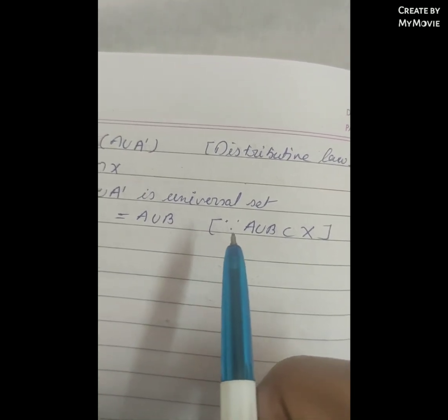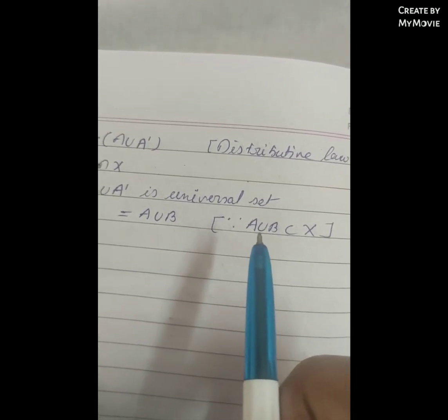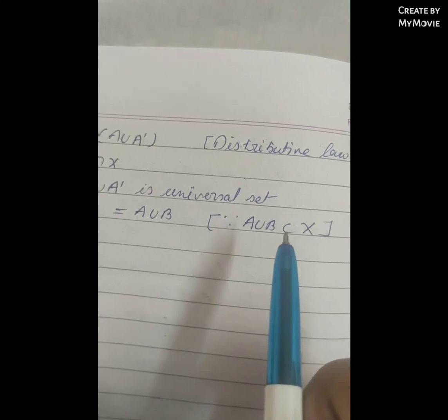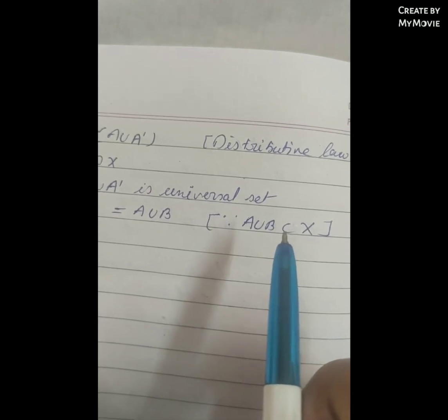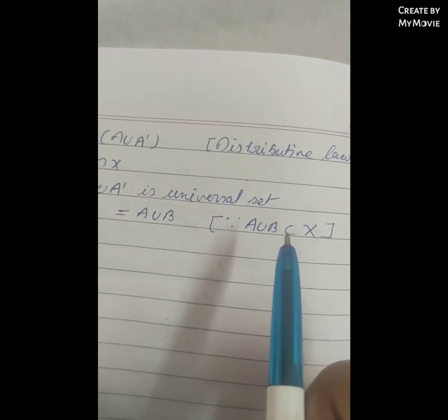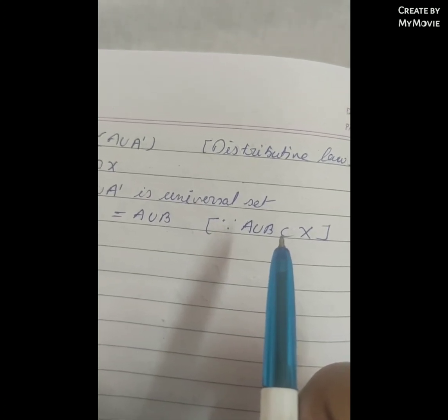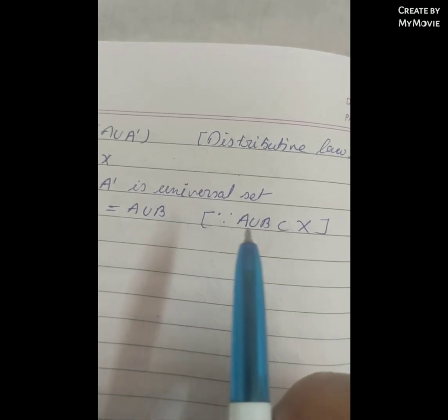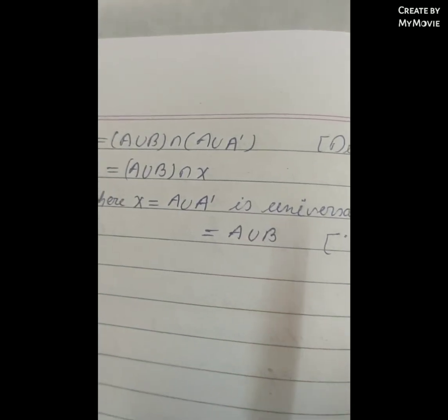Therefore A ∪ (B-A) = A∪B, since A∪B is a subset of X. Hence the second part is also proved.